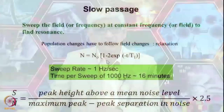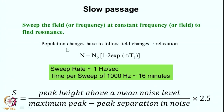Now, how fast can you sweep the field? Recall the discussion with regard to relaxation time. Whenever we change the field there will be changes in the energy levels and in the populations. The population changes have to follow the field changes in order to represent the equilibrium situation appropriately. We notice that the population difference n between two levels is given by n0 times (1 minus 2e^(−t/T1)), where T1 is called the spin-lattice relaxation time.